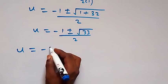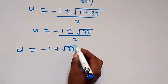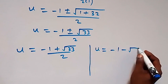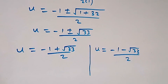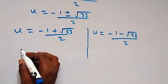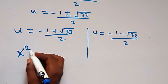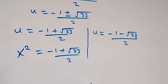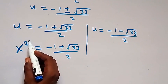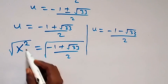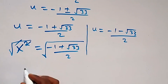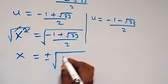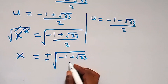So we have u equals minus 1 minus root 33 over 2, and u equals minus 1 plus root 33 over 2. Recalling that u equals x squared, we have x squared equals minus 1 plus root 33 over 2. Taking the square root on both sides, the square cancels with the square root, and x equals plus or minus square root of minus 1 plus root 33, over 2.